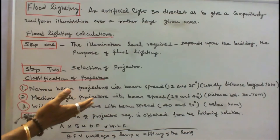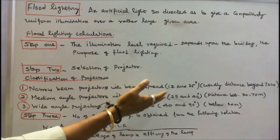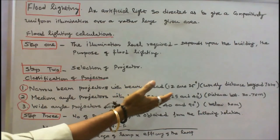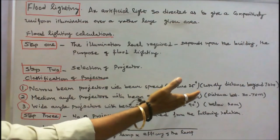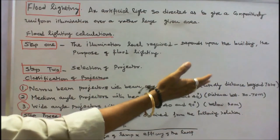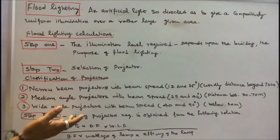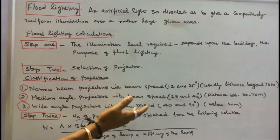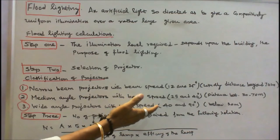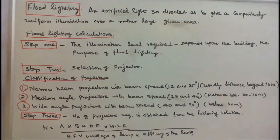(2) Medium angle projectors, with beam spread angle between 25 and 40 degrees, for distances between 30 to 70 meters. (3) Wide angle projectors, with beam spread angle between 40 and 90 degrees, for distances below 30 meters.